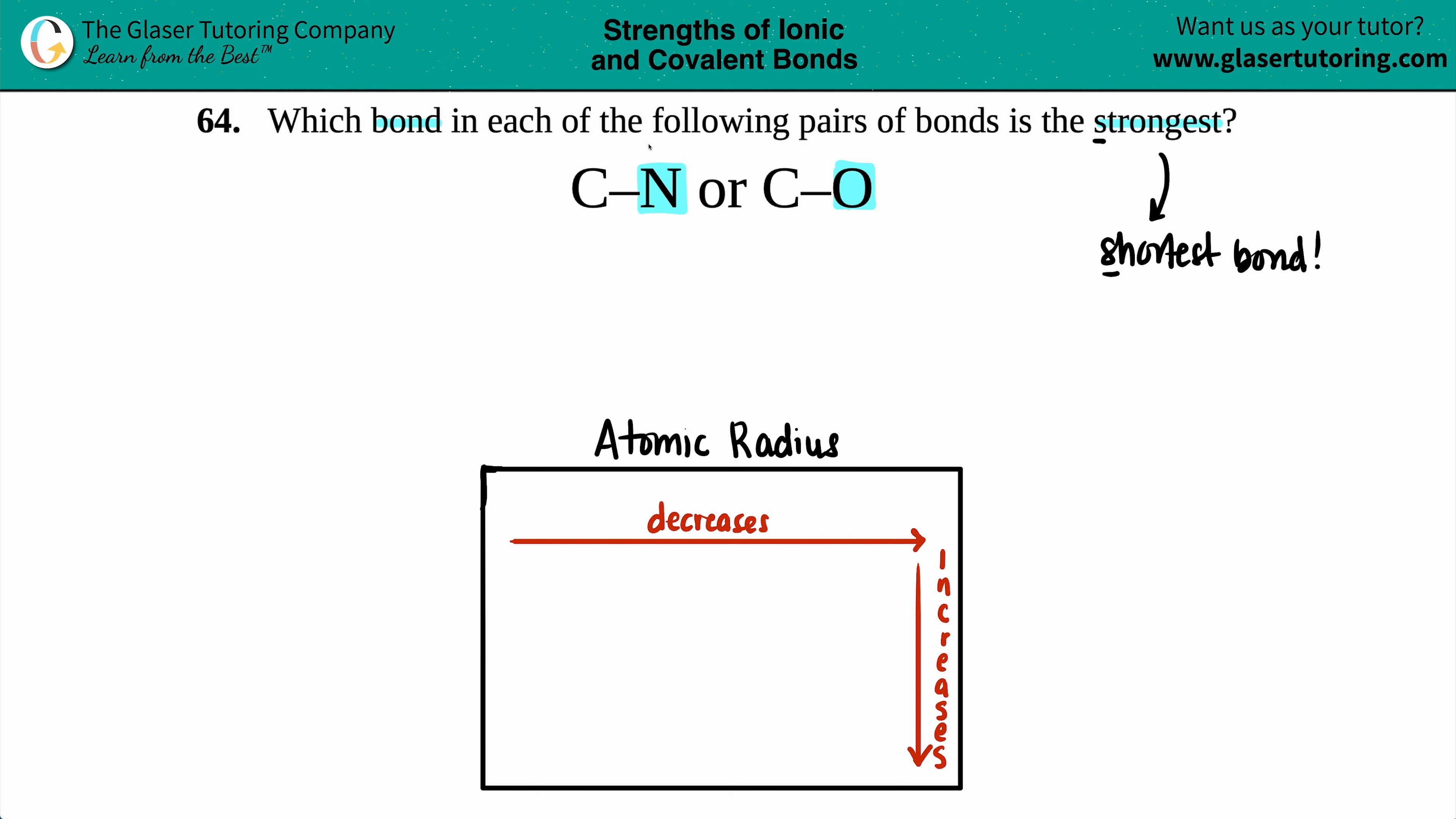So we just have to find out which one is going to be shorter. Well, that has to do with atomic radius and how big or small these atoms are. But before I get into that, I'm just going to say that since we're dealing with carbon that's arbitrary. We're just going to say that carbon is going to be this shape. So here's carbon and here's carbon.